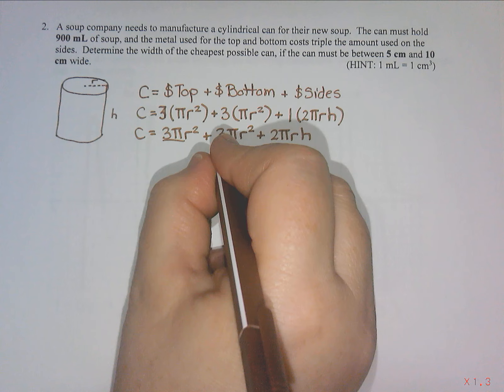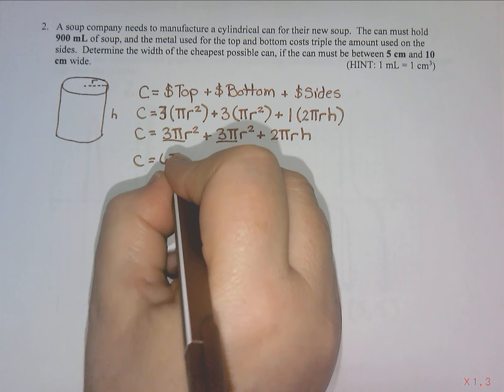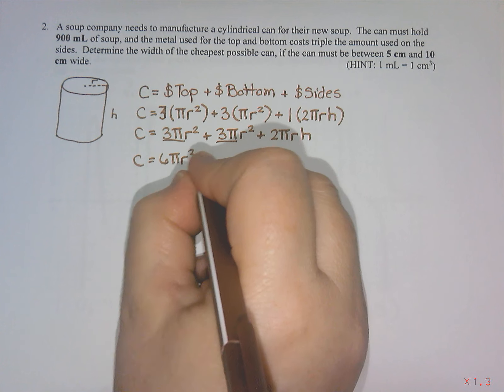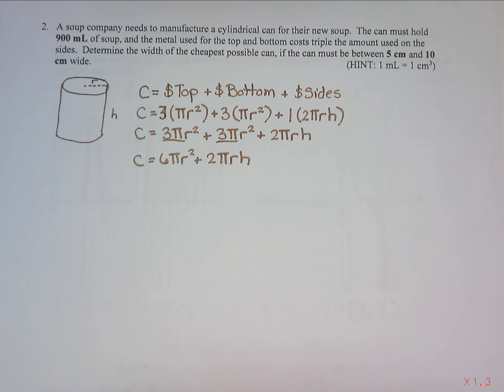This is 3 pi r squared plus 3 pi r squared plus 2 pi r h. These are like terms, so this is 6 pi r squared and then 2 pi r h. The problem here is that I don't know the cost, the radius, or the height. I need more information to assemble my equation.